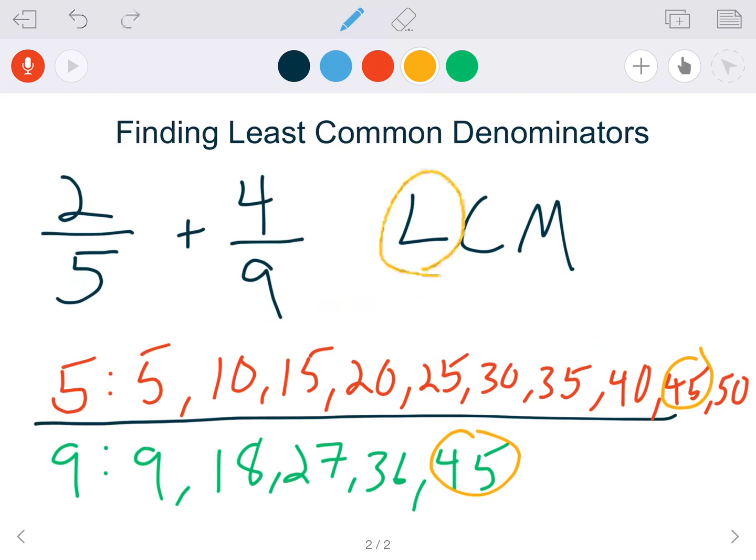So to find the least common denominator, we just did that by finding the least common multiple, which is 45.